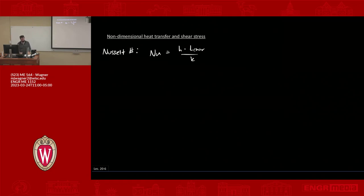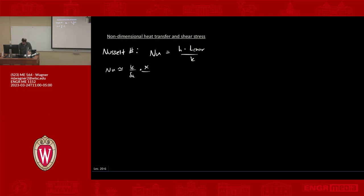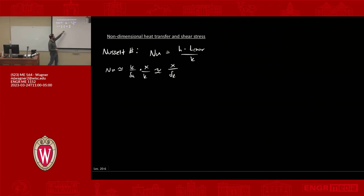Let's use the Nusselt number to understand convection. Using our approximate model for h, which is k over delta-t, and the characteristic length for flow over a flat plate being position x, we get: Nu ≈ (k/delta-t)(x/k) = x/delta-t. So the Nusselt number simplifies to just x over delta-t — it's actually a length ratio: the characteristic length over the thermal boundary layer thickness at that position.